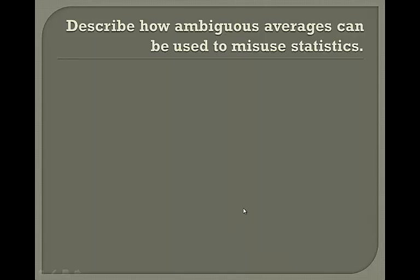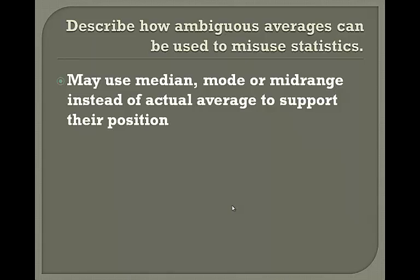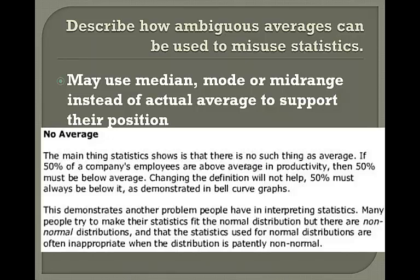The next area is how ambiguous averages can be used to misuse statistics. They could use the median, mode, or mid-range instead of the actual mean to support their position. Basically, 'average' is a loose term — they can use any measure they want. The main thing statistics shows is that there's no such thing as an average. If 50% of a company's employees are above average in productivity, then 50% must be below average, and changing the definition won't help — 50% will always be below it, as demonstrated in bell curve graphs.